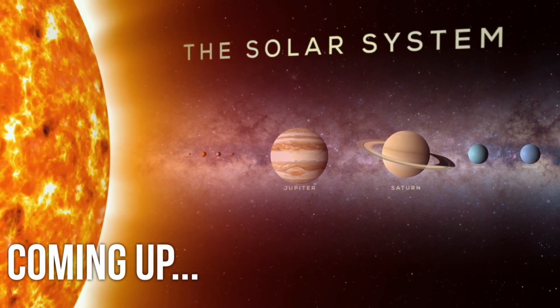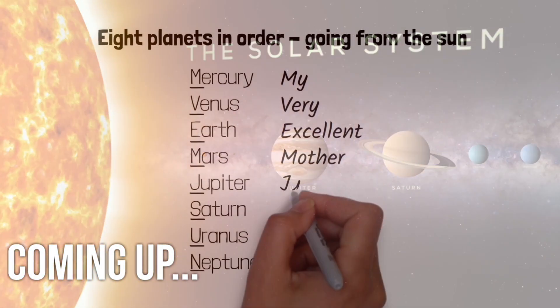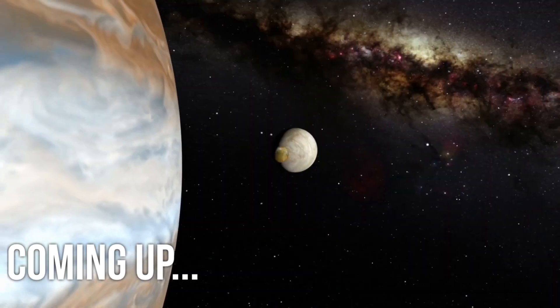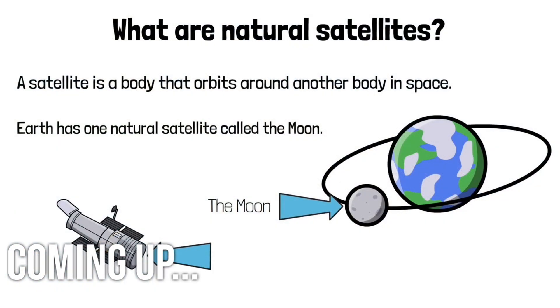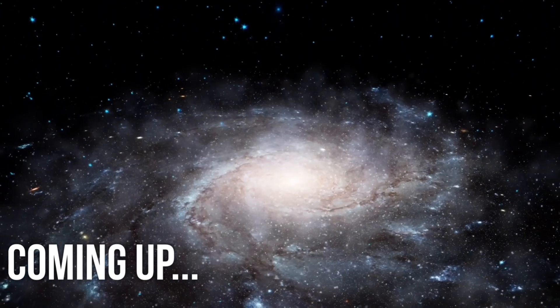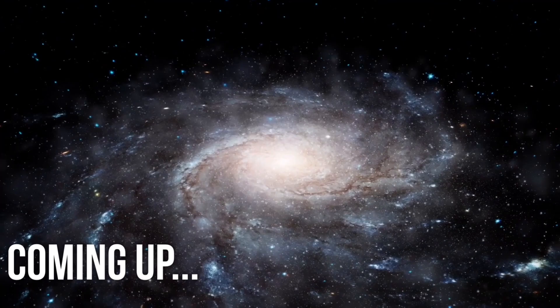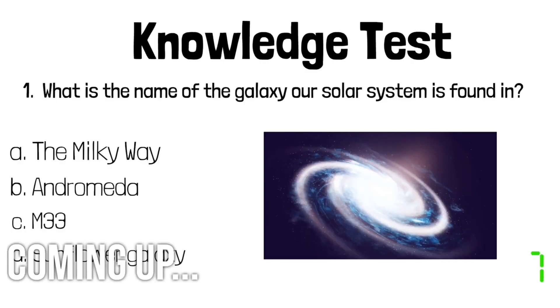Coming up, we look at everything you need to know about the solar system for your GCSE physics exams. We look at easy methods for remembering information about the planets, we look at natural and artificial satellites as well as the Milky Way and how the Sun was formed. At the end of the video there will be a short knowledge test to see how much you know.